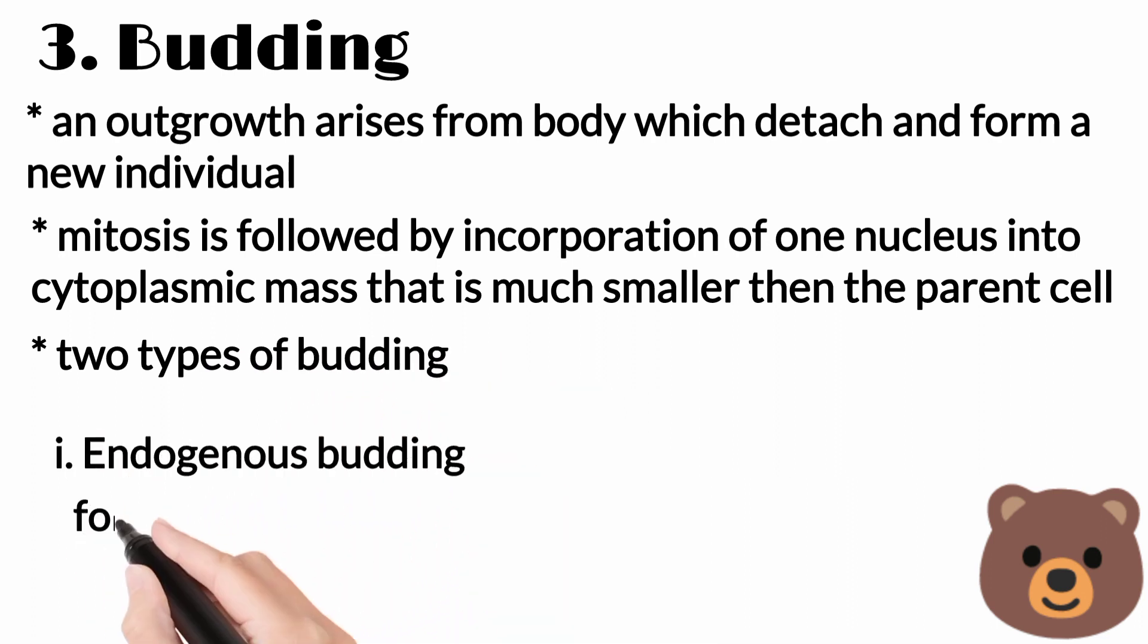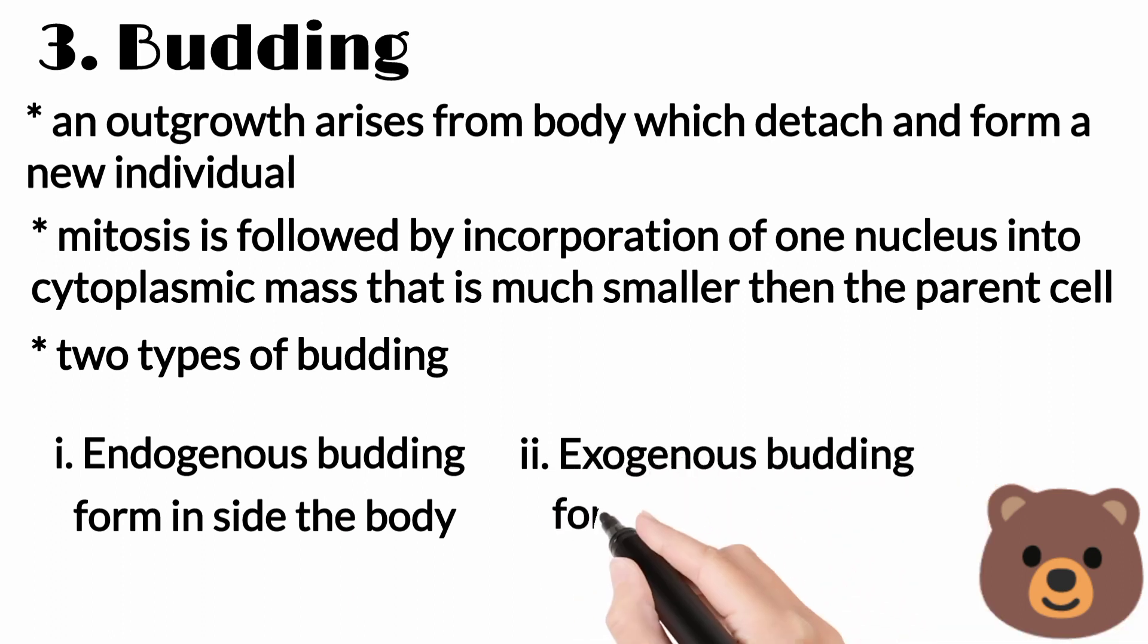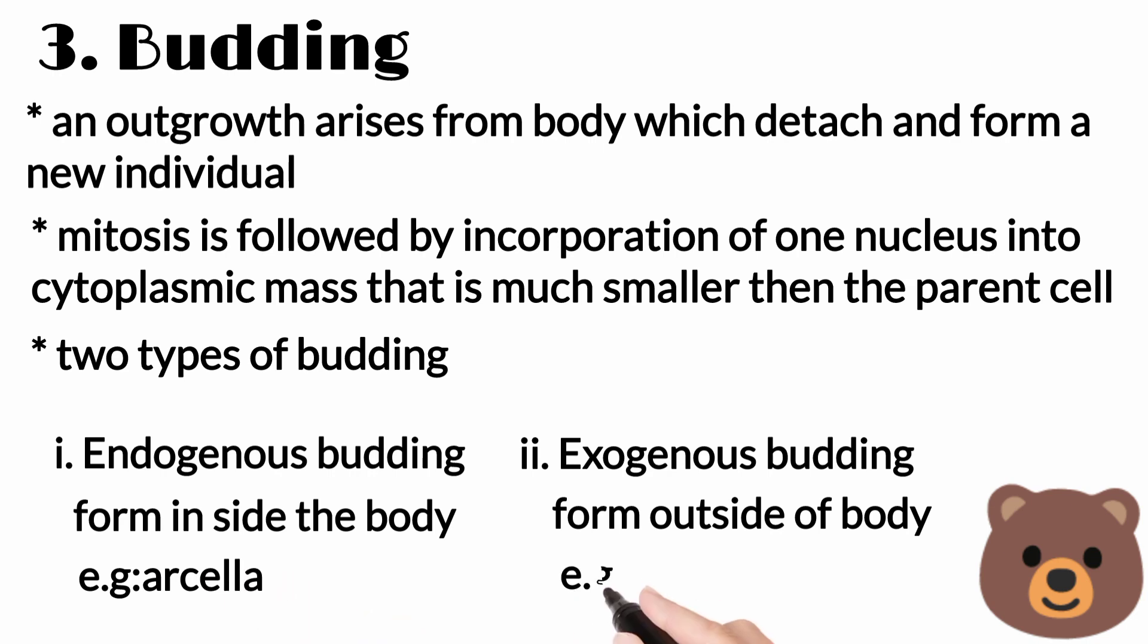Two types of budding: number one is endogenous budding and number two is exogenous budding. Endo means inside and exo means outside.